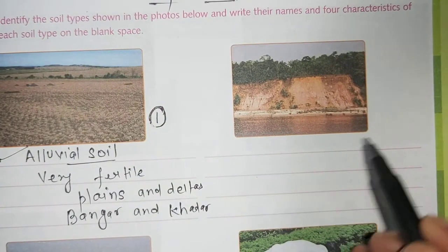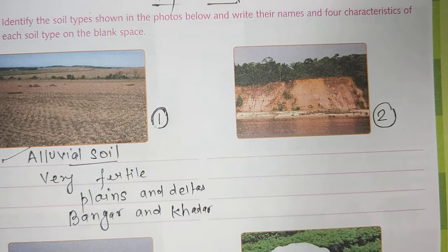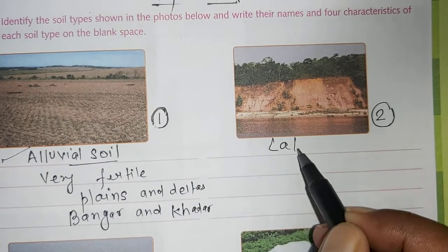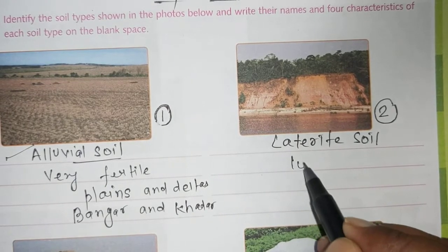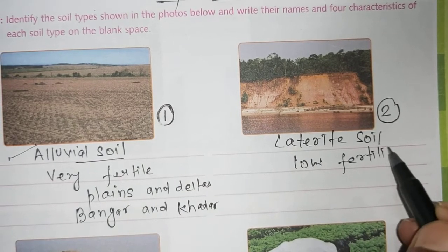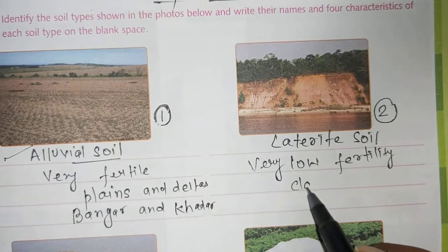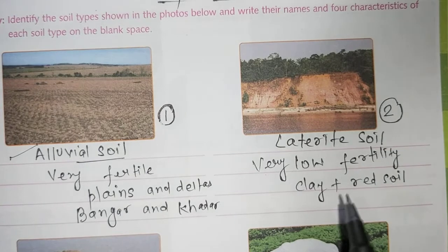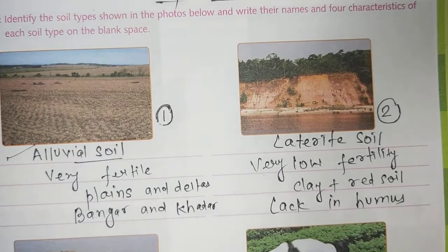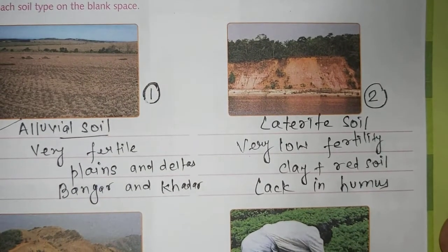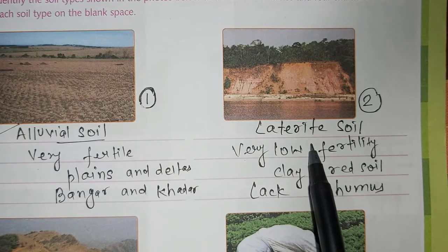Now students, focus on the second soil type. Can you identify? This is our laterite soil. This soil has very low fertility. It is a mixture of clay and red soil, and it lacks in humus. So laterite soil is very low fertility, it is a clay plus red soil mixture, and it lacks in humus.